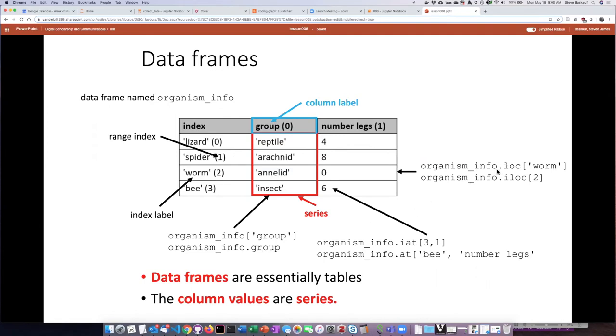If I want to refer to a row I can refer to it using either the loc and the string or iloc and the number. Recall of course that it's a zero base system so the third row is going to be number two.